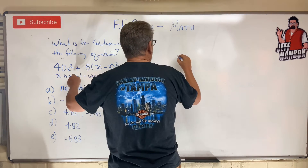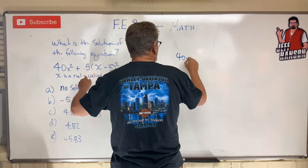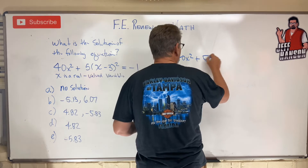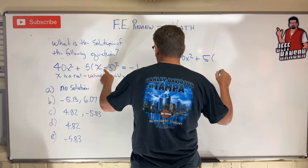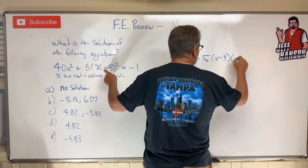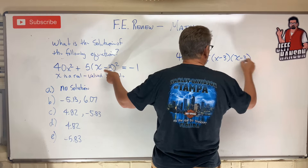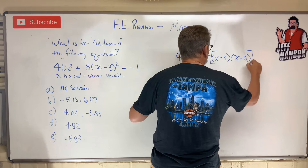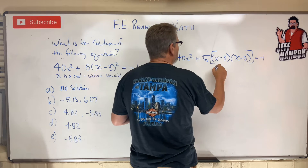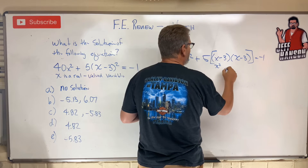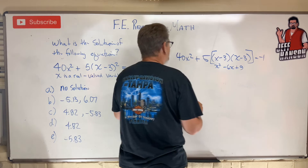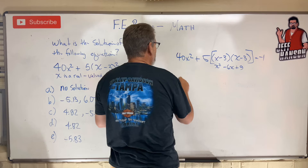So here we go: 40X² plus 5 times — and don't be confused — this is (X minus 3) times (X minus 3). That equals minus 1. FOIL that out: it becomes X² minus 6X plus 9. I'm going to multiply that by 5.